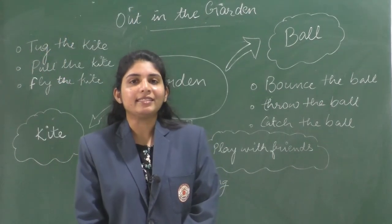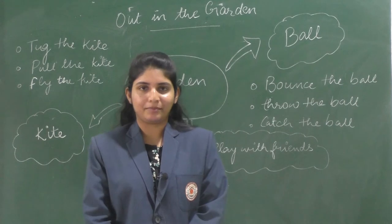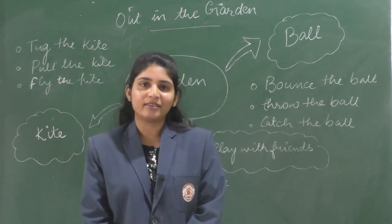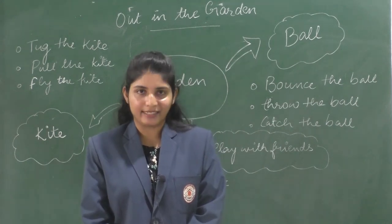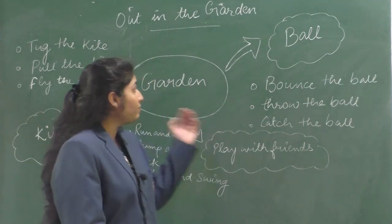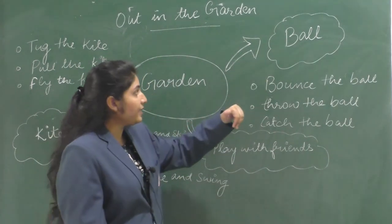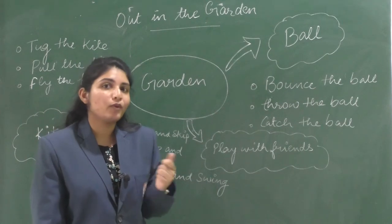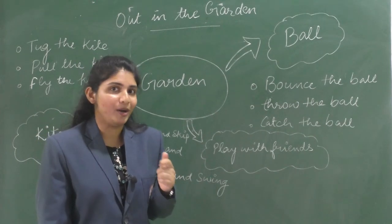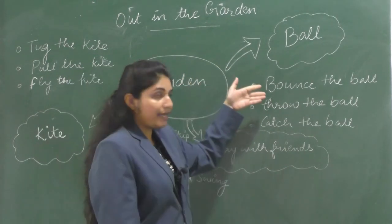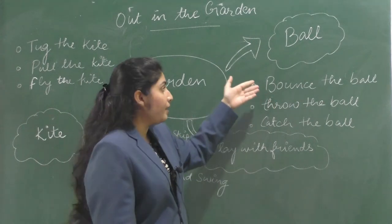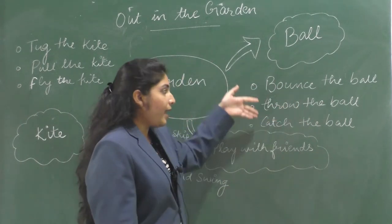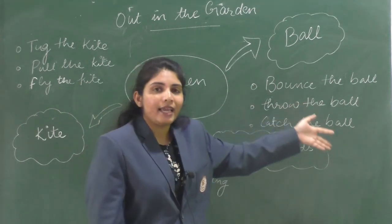So let's see the mind map of this chapter, 'Out in the Garden,' as we discussed already in our class. In the first stanza, the speaker likes to play with a ball. The actions we do with the ball are: bounce the ball, throw the ball, and catch the ball.